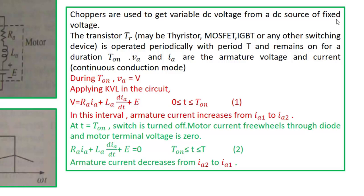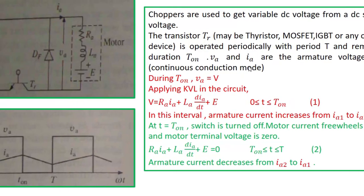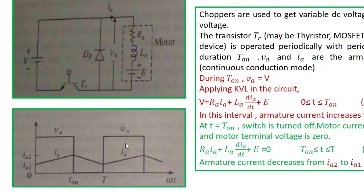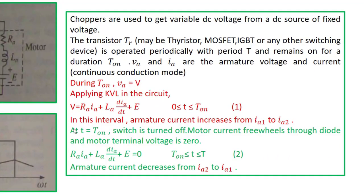Choppers are used to get variable DC voltage from a DC source. The transistor may be a thyristor, MOSFET, IGBT, or any other switching device. It is operated periodically with time period T and remains ON for TON. VA and IA are armature voltage and current, and we are in continuous conduction mode — current never becomes zero. During the ON period, armature voltage equals supply voltage. Applying KVL: V = IA×RA + LA×(dIA/dt) + E, valid for 0 ≤ t ≤ TON. In this interval armature current increases from IA1 to IA2.